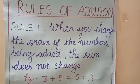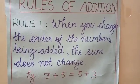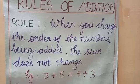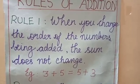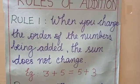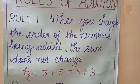Let's recall the rules of addition and start our class. Rule 1: When you change the order of numbers being added, the sum does not change. Example: when you add 3 plus 5 or 5 plus 3, the answer will be 8 and it does not change.